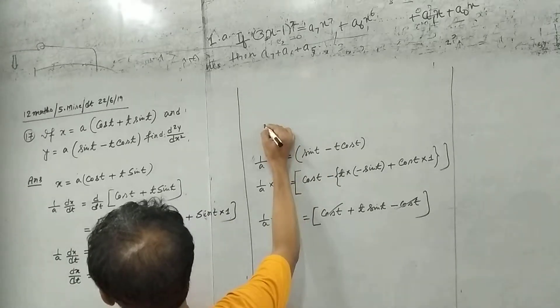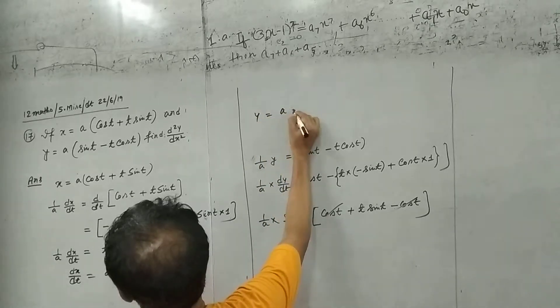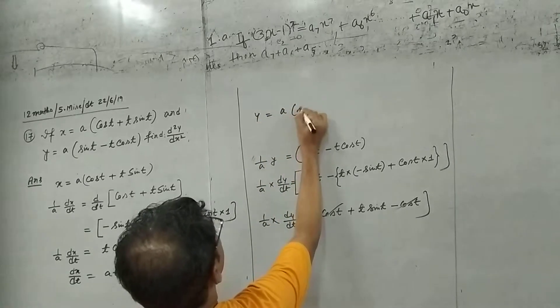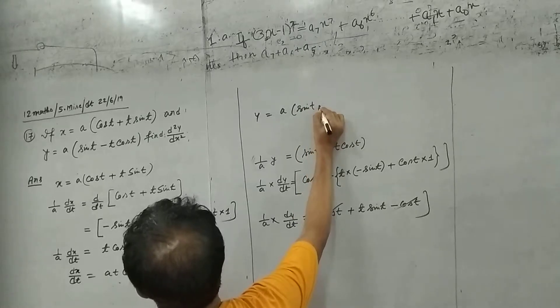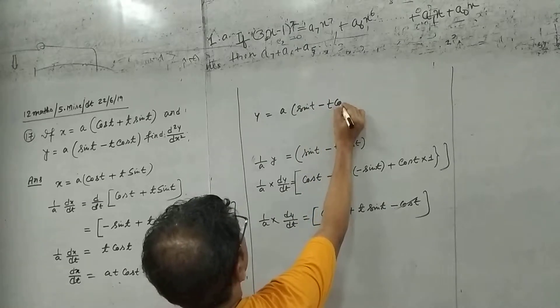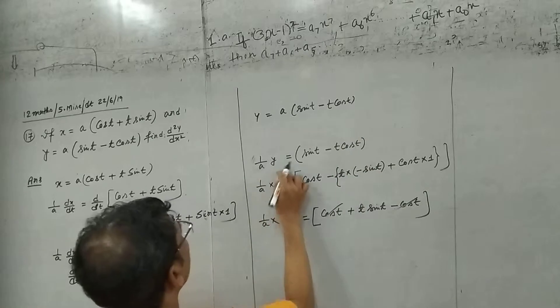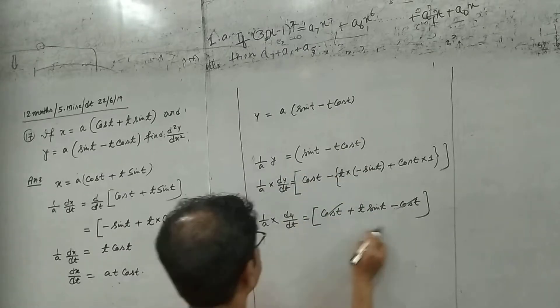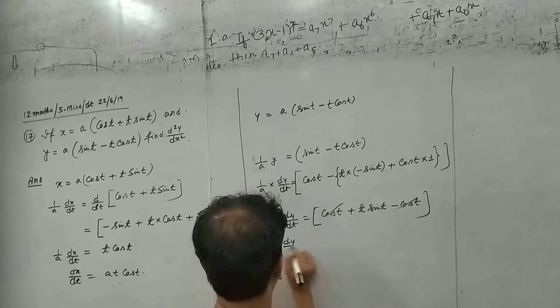That is y plus t, y plus t cos t, on by y.